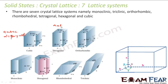In tetragonal, a is equal to b but not equal to c — two sides are equal and the third side is not equal. The angles are all equal and they are 90 degrees. This is called tetragonal.